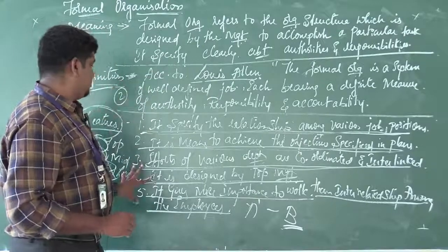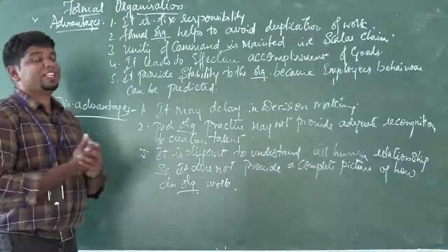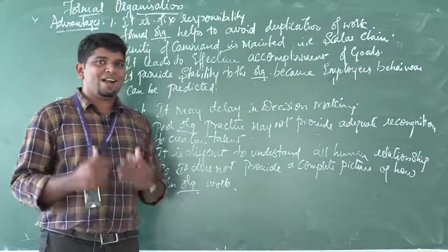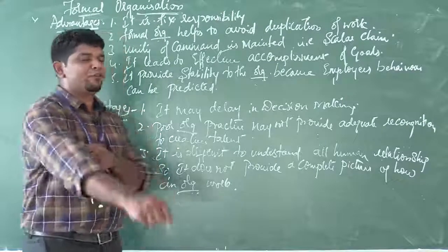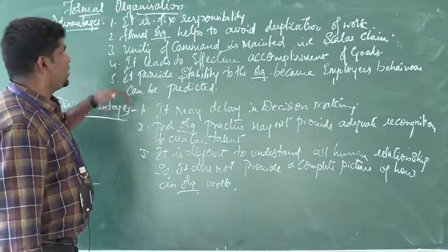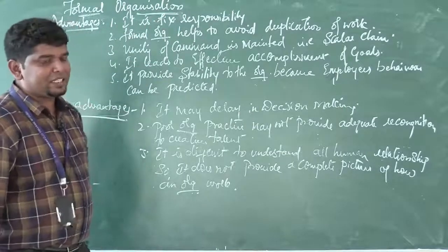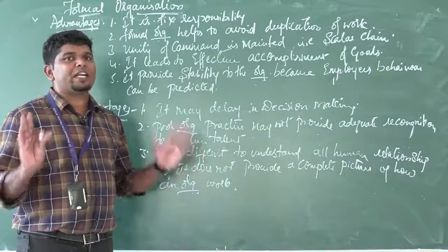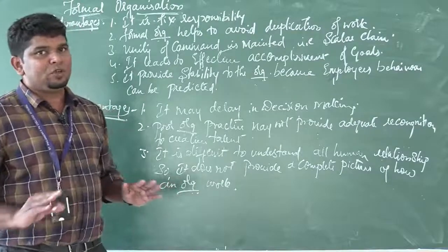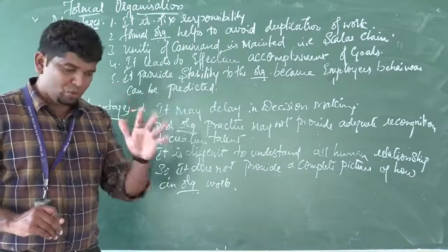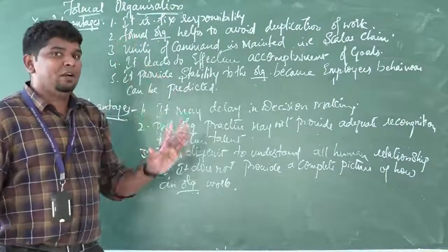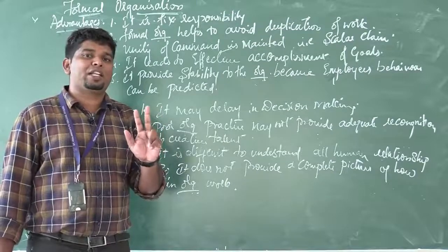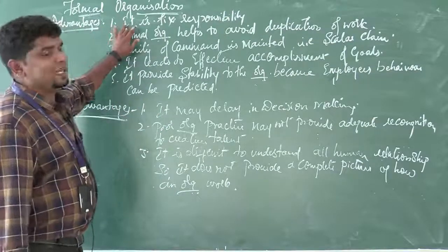Now the advantages of formal organization. First: fixed responsibility. To whom you have to report, what work has to be done — everything is fixed by the top level management. You need not ask anybody; you go ahead with the work assigned. This avoids wastage of time and leads to effective utilization of resources. That is the first advantage — fixed responsibility.